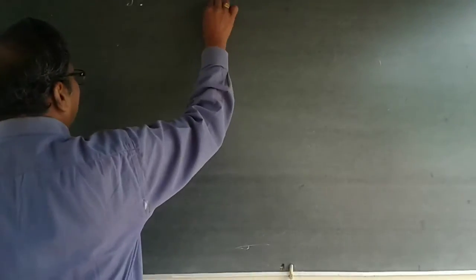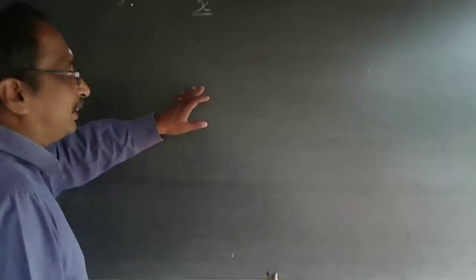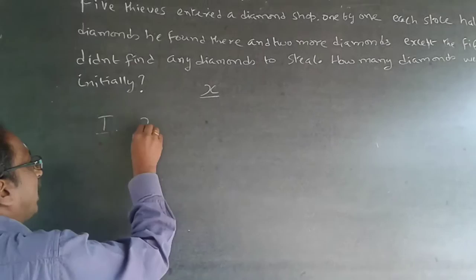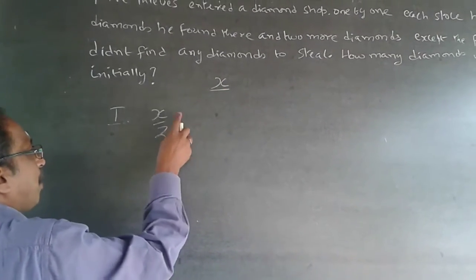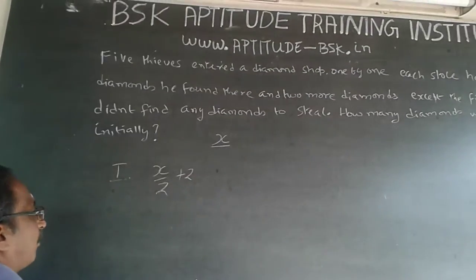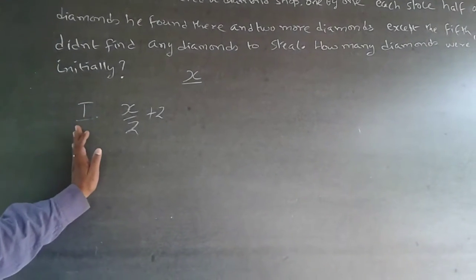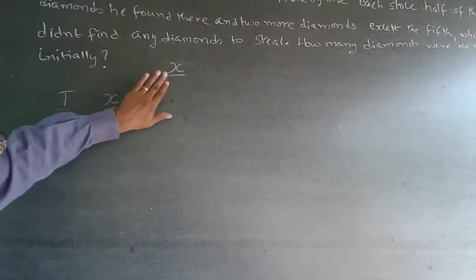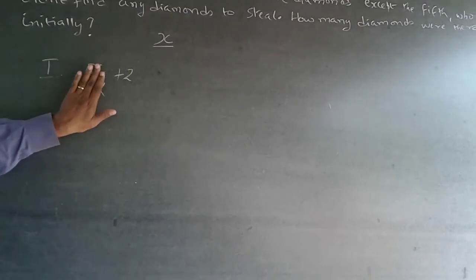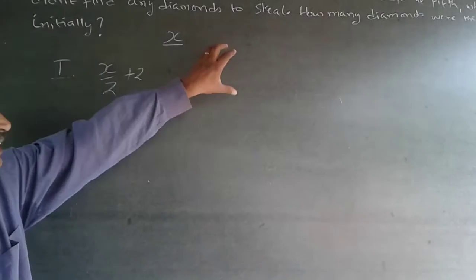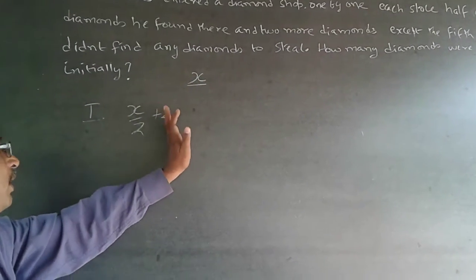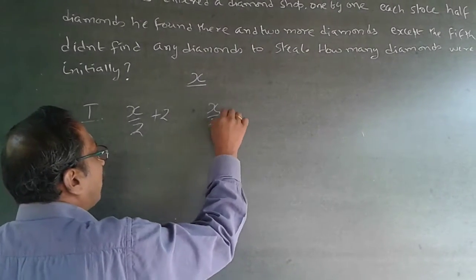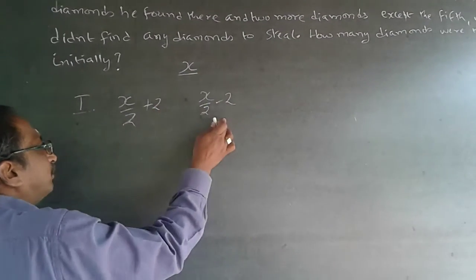Let X be the number of diamonds initially. The first thief takes X/2 plus two. To save time, write X/2 on both sides: if it is plus two on the taken side, it becomes minus two on the remainder side. So the remainder after the first thief is X/2 minus two.